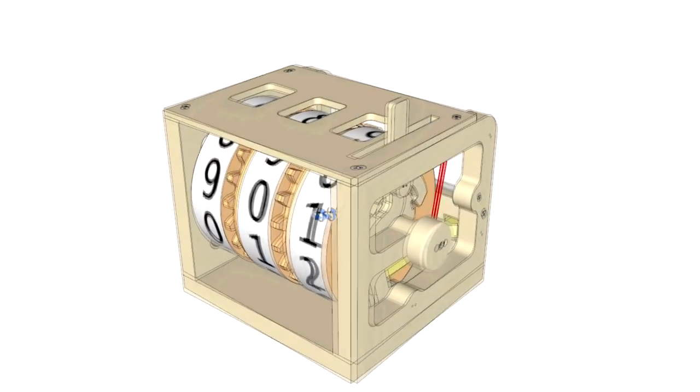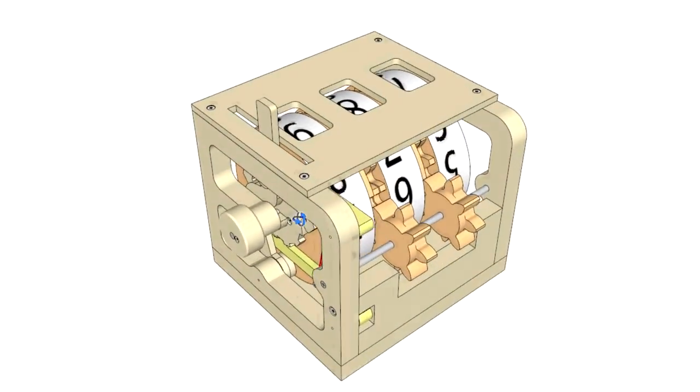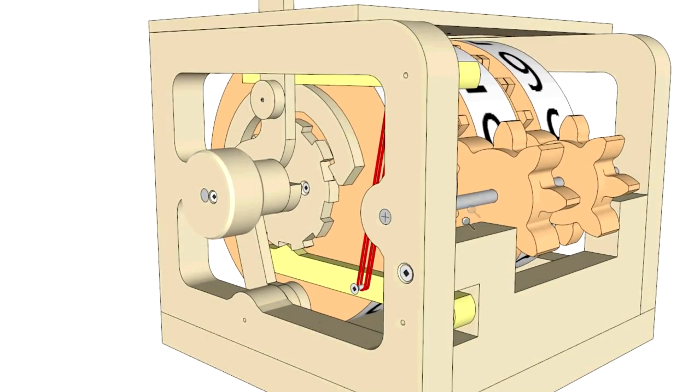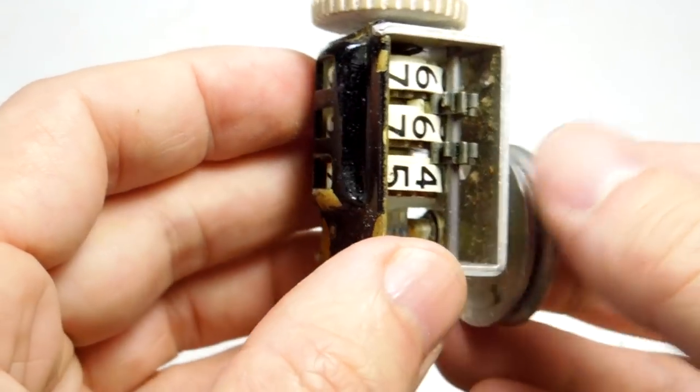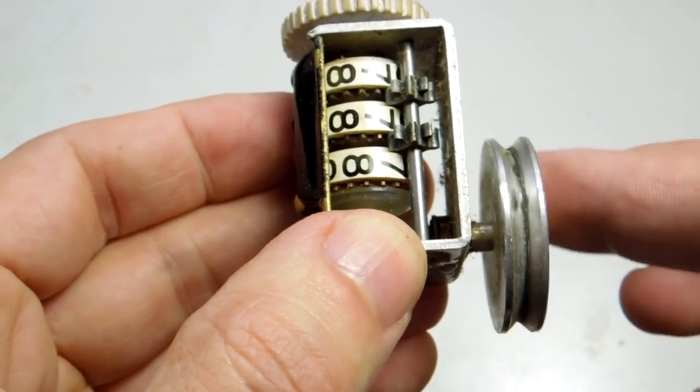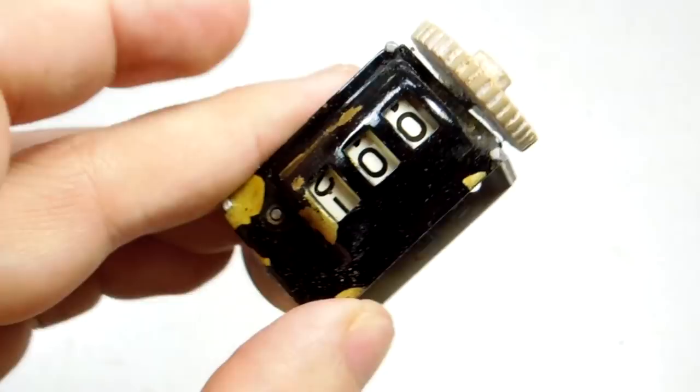I want to build this counting mechanism which I've drawn up a CAD model for. It's based very much on one of these little counter wheel mechanisms. This one's out of an old tape deck. They all work pretty much the same way with the special little gear that does the carry from one digit to the next.